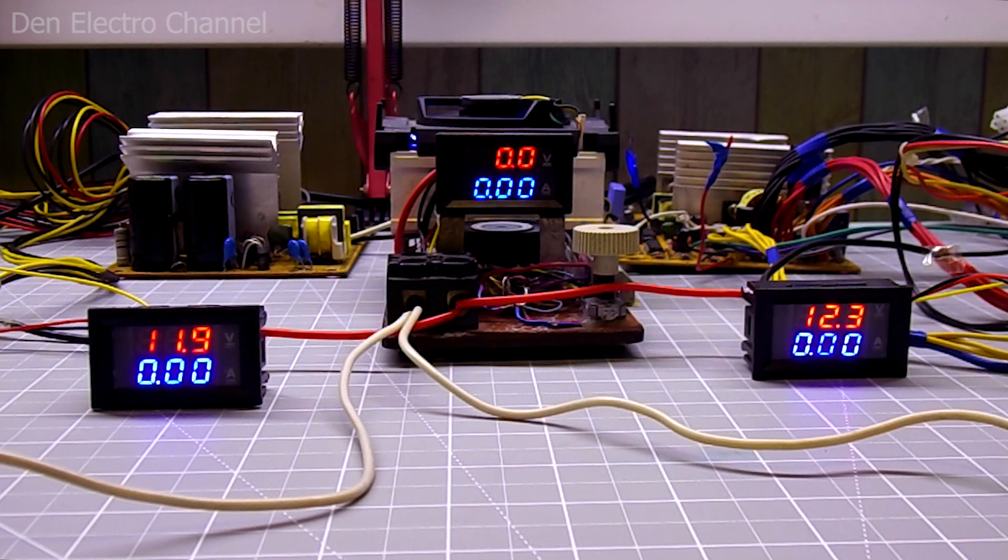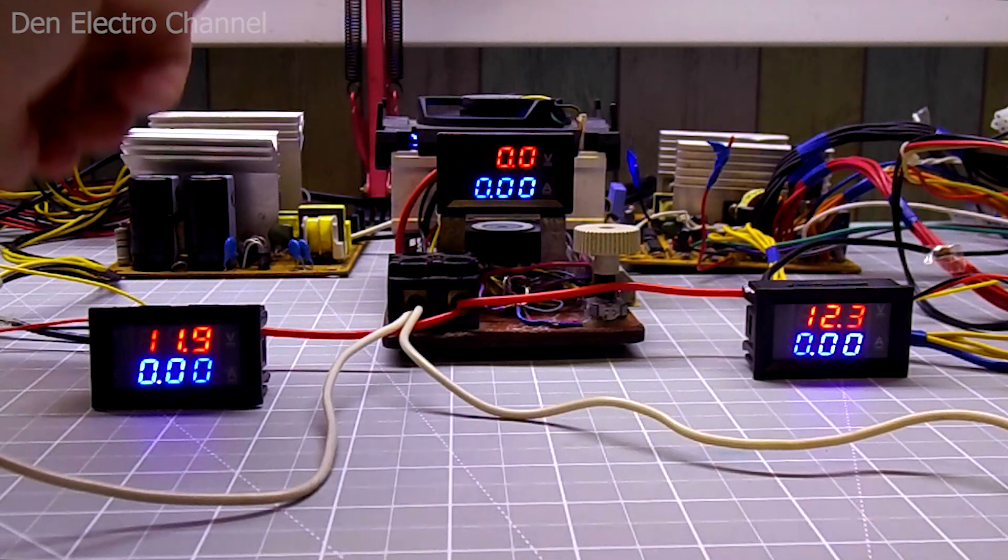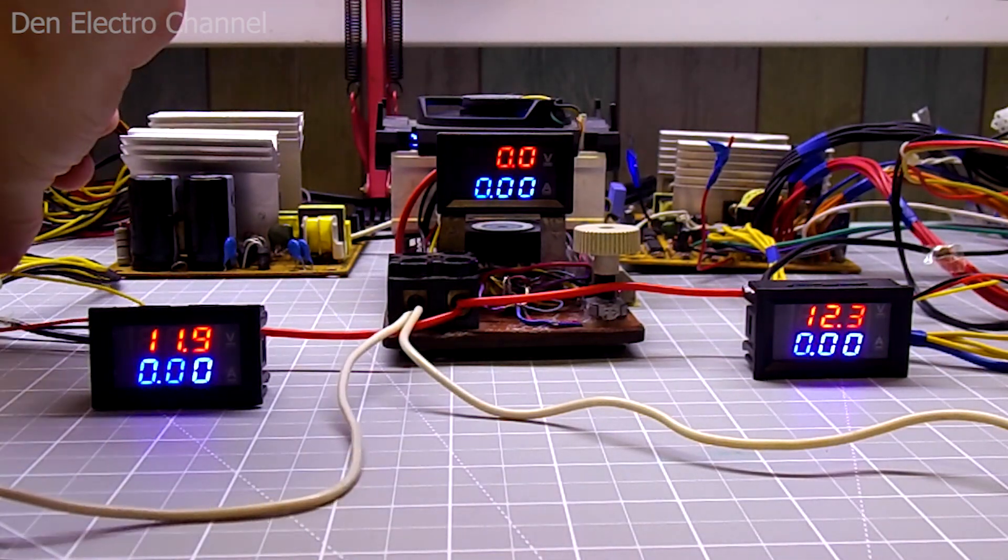Let's move on to practice. Everything is the same here as in the previous test. Each voltmeter shows the voltage and current of its power supply. None of them are connected to the electronic load yet. Each of the voltameters now shows a different voltage. The first power supply has a slightly lower voltage on the 12 volt line and the second one has a slightly higher voltage. First, I connect the left power supply to the electronic load.